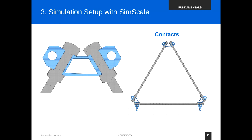When defining essential contacts, remember: you need contacts wherever faces are touching, can move relative to each other, and transfer forces. For one connector, we have three contacts: the cylindrical face of the rod touching the hole of the connector on each side, and the interface between the washer and the plastic connector. We need to do these three contacts for all three connectors, so nine contacts total.